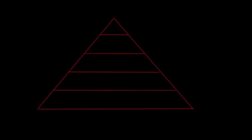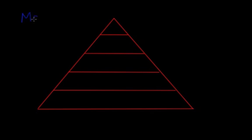We talked about before that there are five approaches to understanding motivation. One of these approaches is called Maslow's Hierarchy of Needs, and it's actually broken down into a pyramid — it looks just like this. It was created by a famous psychologist named Maslow. Maslow said that we have needs that need to be fulfilled in a specific order, starting from the bottom of the pyramid all the way to the top.